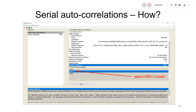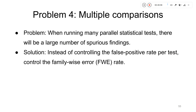In SPM, to handle serial autocorrelations you go to the 'serial correlations' feature and select AR(1).